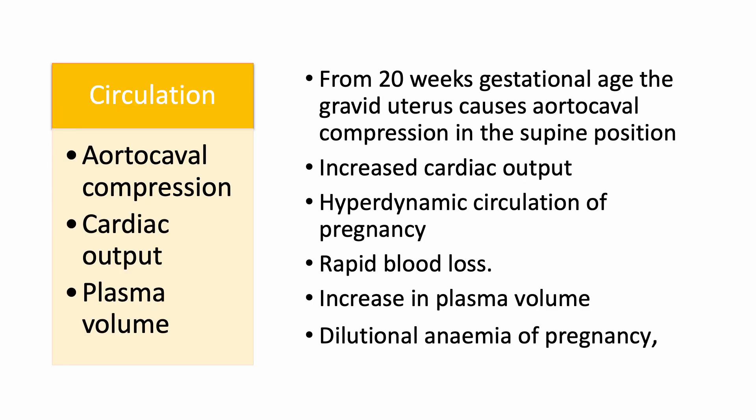From 20 weeks gestational age, the gravid uterus causes aorto-caval compression in the supine position, which leads to a 30-40% reduction in cardiac output. Increased cardiac output and the hyperdynamic circulation of pregnancy can lead to rapid blood loss. Blood loss is less tolerated due to the increased plasma volume, which leads to a dilutional anaemia of pregnancy.